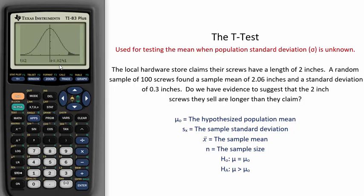In this problem, we can reject the null at an alpha of 0.05 to say that there is evidence for the alternative that the true mean of the length of screws is greater than 2 inches.